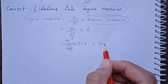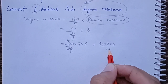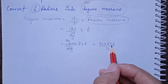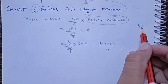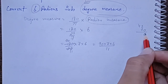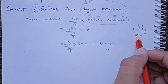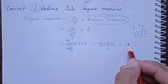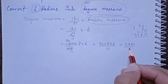So we have 90 into 7 into 6 divided by 11. Multiply all of them: 42 into 90 gives 3780. So we get 3780 divided by 11.